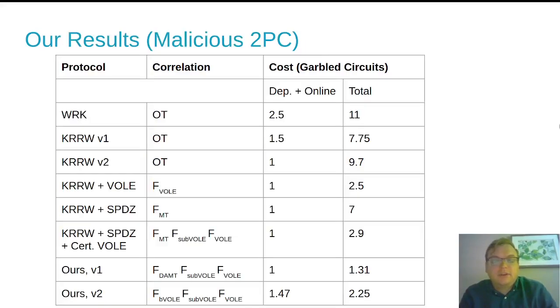These are our results on this page and the next. And we compare our work, not only to Wang et al. and Katz et al., but also to the approaches of Katz et al., where you sort of graft in some of these simple correlations, adding in VOLE or MT-style randomness and speeds in kind of a naive way.